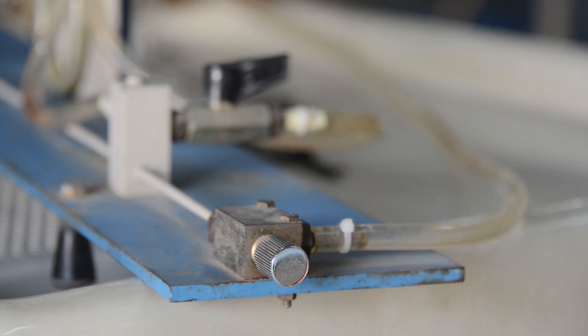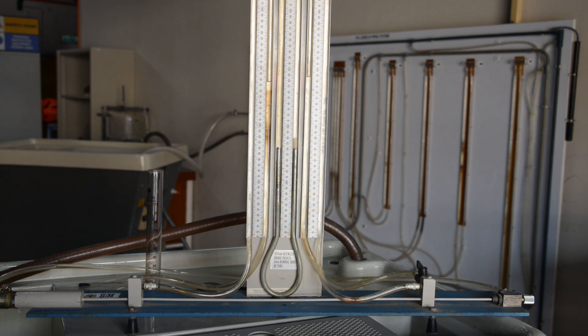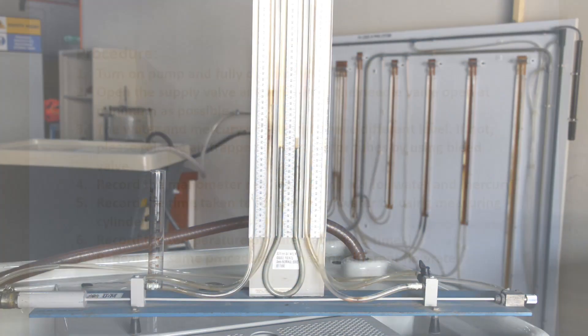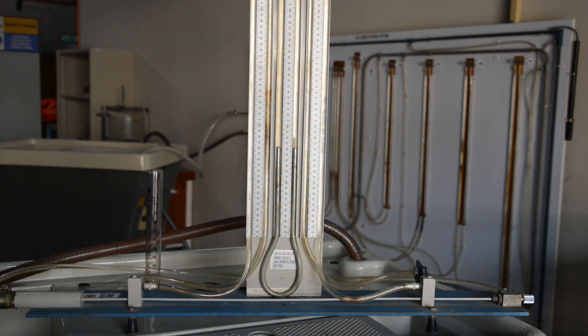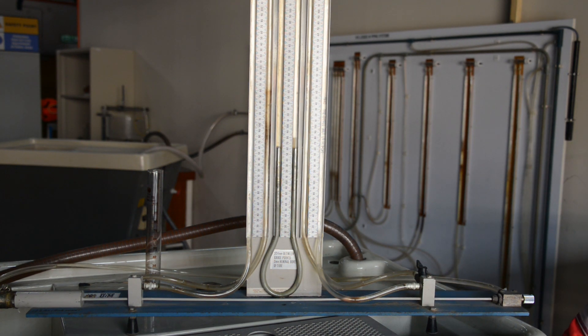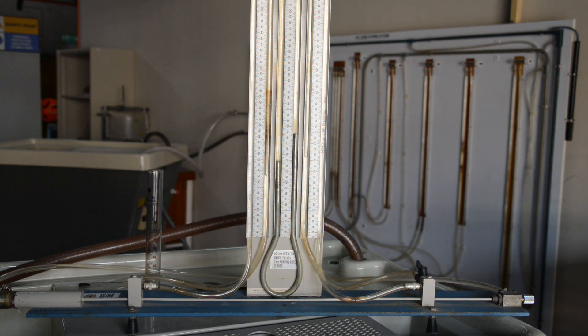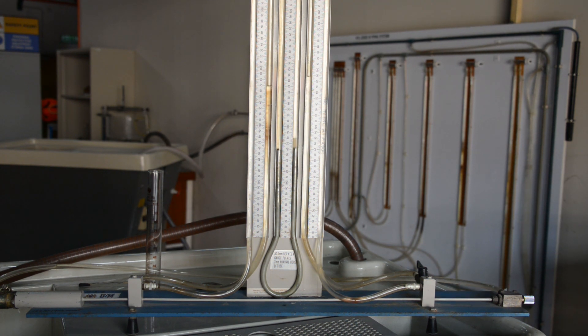The water and mercury level in manometer tube will start to move up and down. This is referring to the changes of pressure at minimum flow rate. If the manometer level is not moving, please release the air trapped in manometer tubes by using bleed valve.